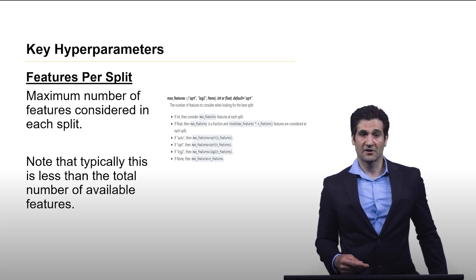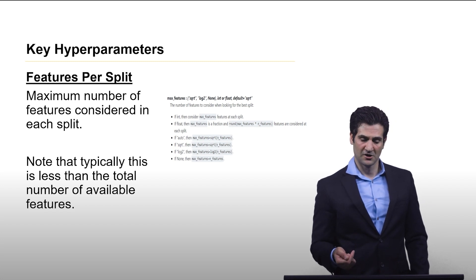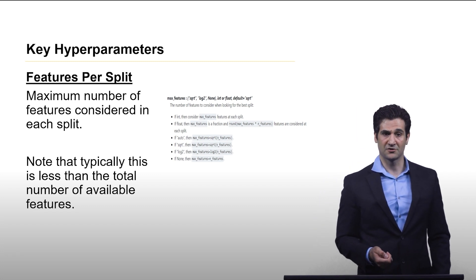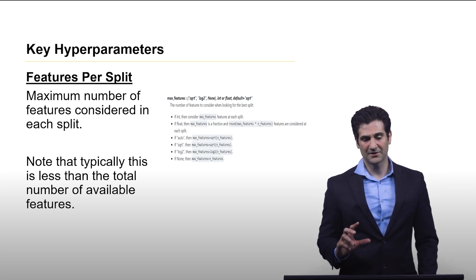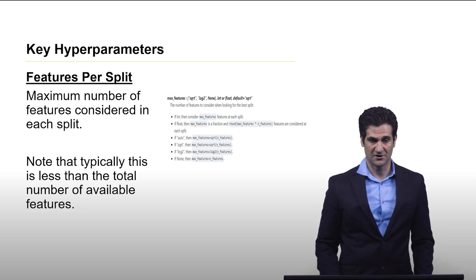What you see here in the screen capture, this is just from the documentation from scikit-learn showing the hyperparameter for the maximum number of features per split and different ways it can be set. This is a very common hyperparameter in pretty much any implementation of a decision tree.